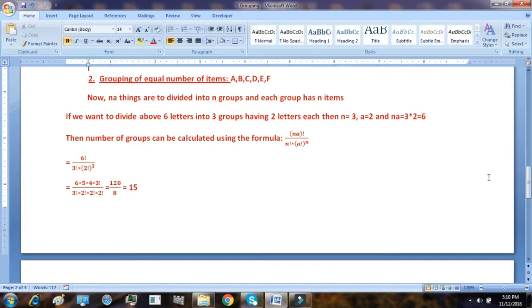Here NA equal to 6. So factorial 6 upon N equal to 3, factorial 3 into factorial 2 to the power 3. When you solve it, it comes to 15. So that's how we group the equal number of items. The 15 number of groups can be formed such that there are 3 groups having 2 letters each.